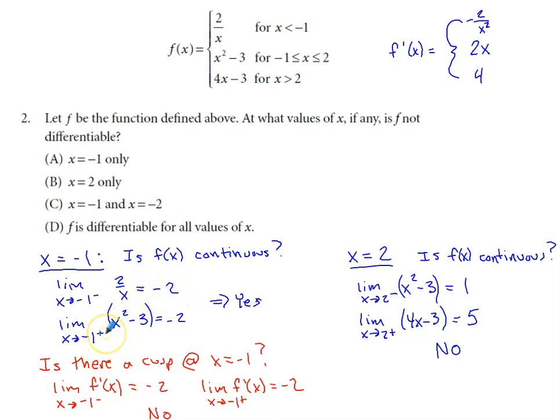On the bigger side of negative one, I would be defined by the middle piece of the function. So if I take negative one and place it here, negative one squared is positive one, positive one minus three is negative two. Yes, I am continuous at negative one.